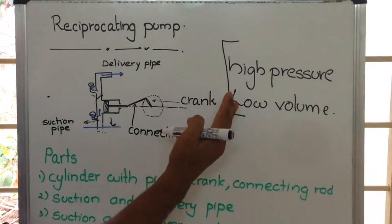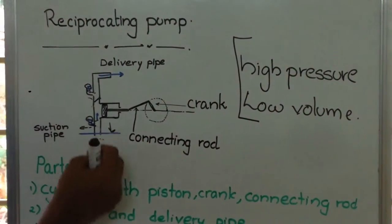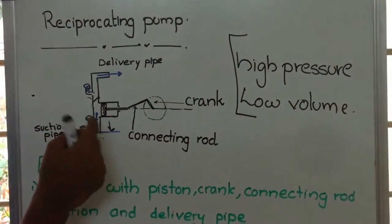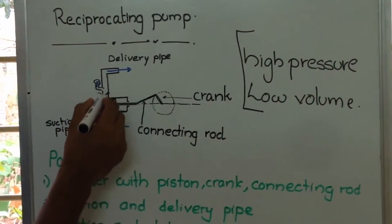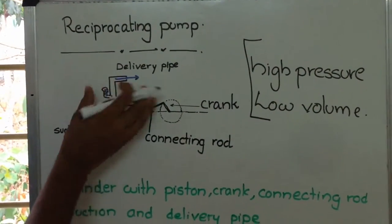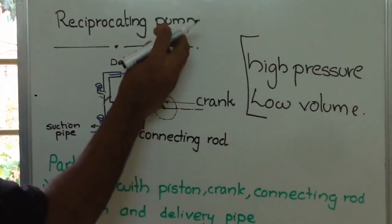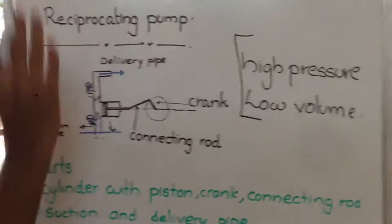As the piston moves towards the left side, it pushes the water inside the cylinder. Since the valve provided is a one-way valve, the delivery valve opens and this water moves through the delivery pipe to the desired height, reaching the tank.